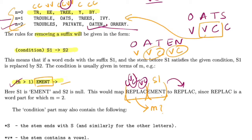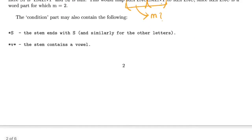Now they've talked about what a condition can be. It could be *S, which means the stem ends with character S, and similarly for other letters. If it is *V*, it means the stem contains a vowel. You can think of this star as zero or more, which is how we usually write regular expressions.